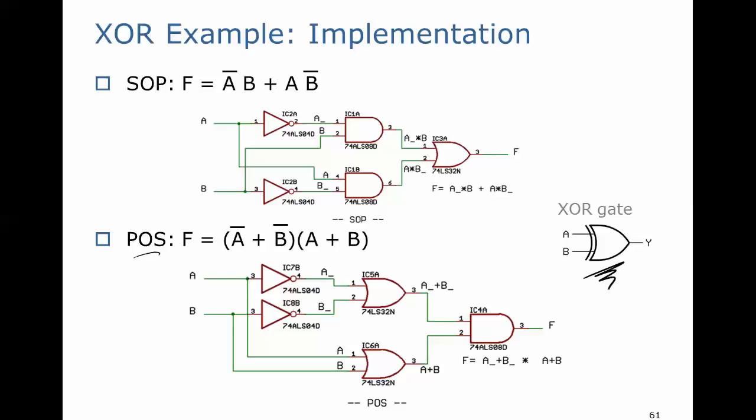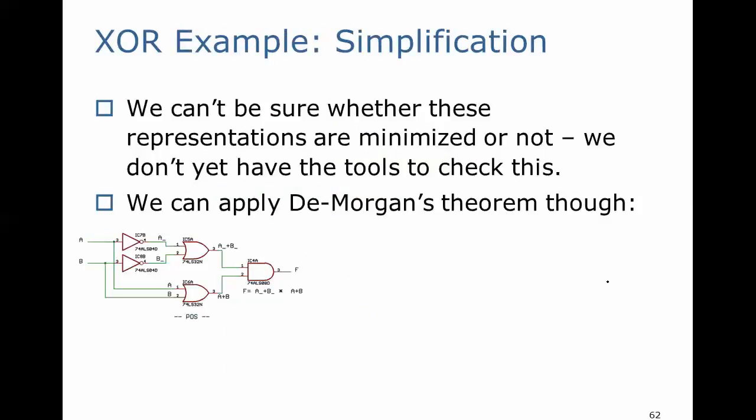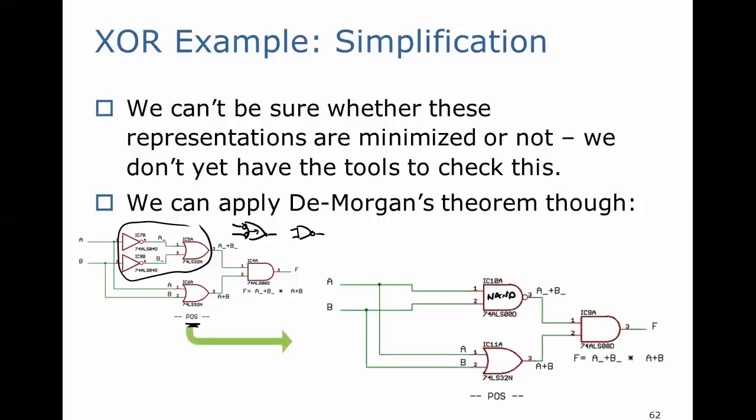We can't be sure whether these representations for the XOR gate are minimized or not. We don't yet have the tools to check this, and we will do that in the next lesson. But we can do one thing: we can apply DeMorgan's theorem and at least get a different rendering. I've taken the product of sums implementation. I can put the bubbles right at the input going into the OR gate. When I bubble push those through, this is going to turn into an AND gate and the bubble will show up at the output. So that will give us a NAND right here. So at least it's three gates instead of five gates before, but they're all three different gates still.